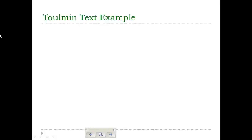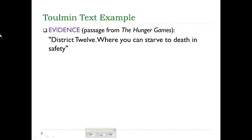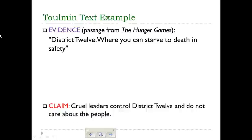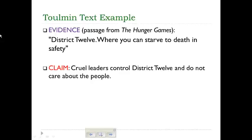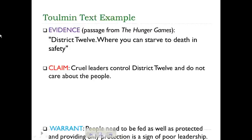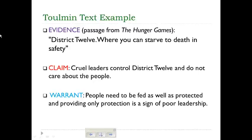Now we're going to look at a text example using a book in an English class — or perhaps your history text. The first example is from The Hunger Games. Here is a quotation: 'District 12, where you can starve to death in safety.' Reading this in context, I'm going to think about what the author Suzanne Collins might be saying about District 12. I'll make the claim that perhaps she's saying that some kind of cruel, structured leader is controlling District 12 and doesn't care about the people. My warrant then would be that people need to be fed and protected, and by only providing protection, they're cruelly treating the people in that district.